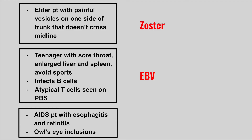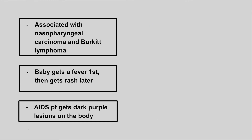The next patient has AIDS and gets esophagitis and retinitis, and we see owl's eye inclusions. This is CMV. The next virus is associated with nasopharyngeal carcinoma and Burkitt lymphoma. This is EBV.